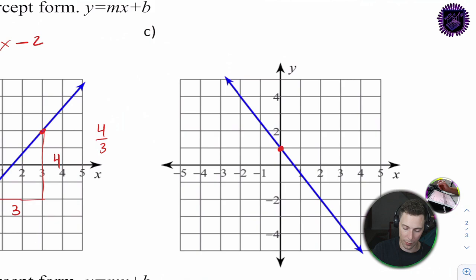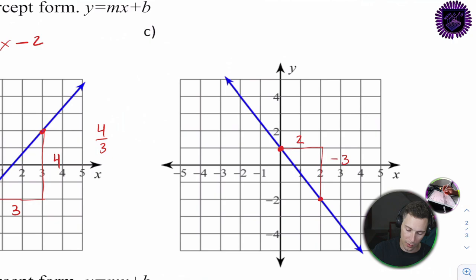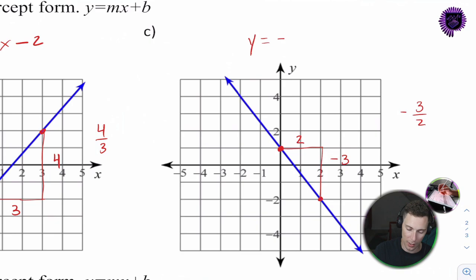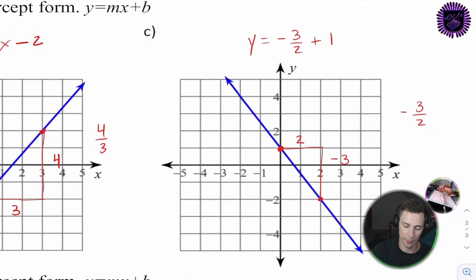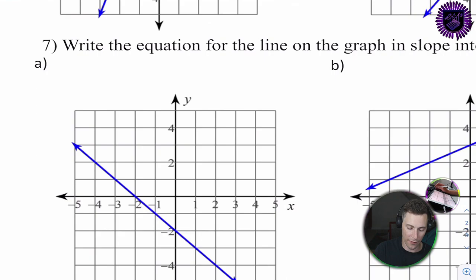For 6c: the y-intercept is at y = 1. It's going to be a negative slope. We go from one point to the next — 2 over and 3 down — so the slope is negative 3 over 2. y = negative 3/2 x + 1.